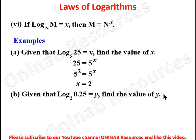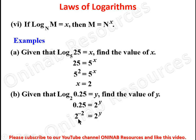For the second example, given that log 0.25 base 2 equals y, find the value of y. Applying the relationship, 0.25 equals 2 raised to power y. Since 0.25 is 1 over 4, and 1 over 4 in index form is 2 to the power of negative 2, we have 2 to the negative 2 equals 2 to the power y. The indices are equal, so y equals negative 2.